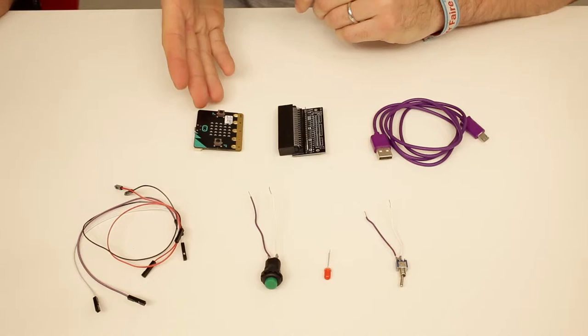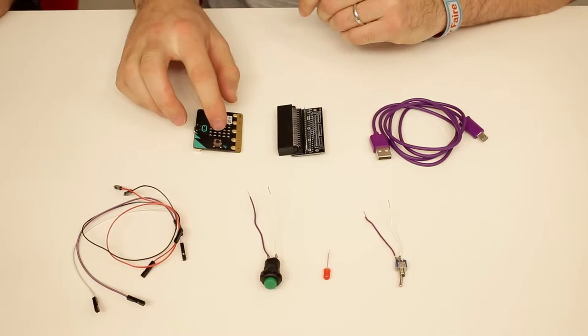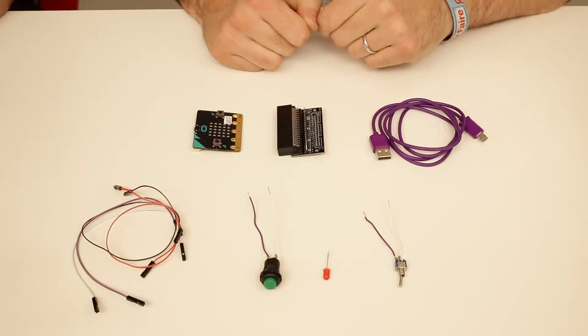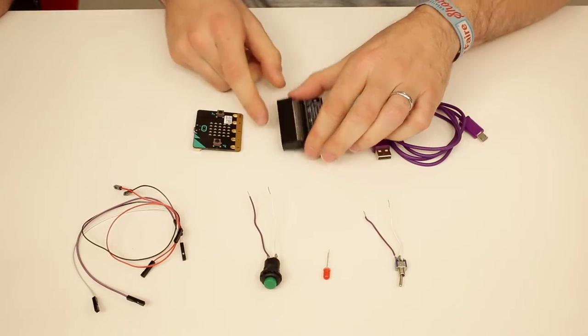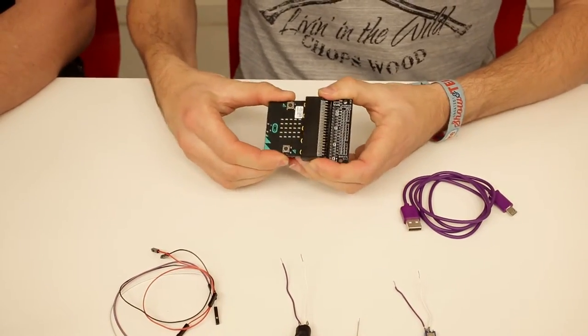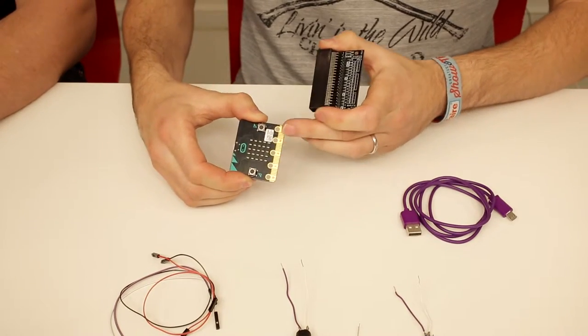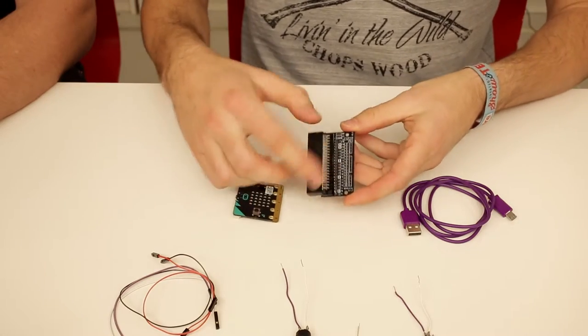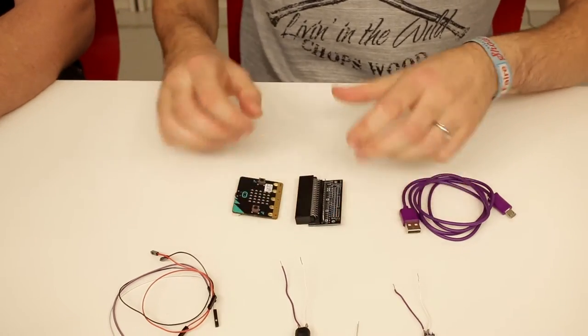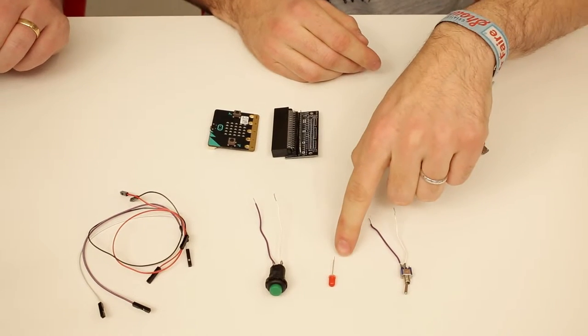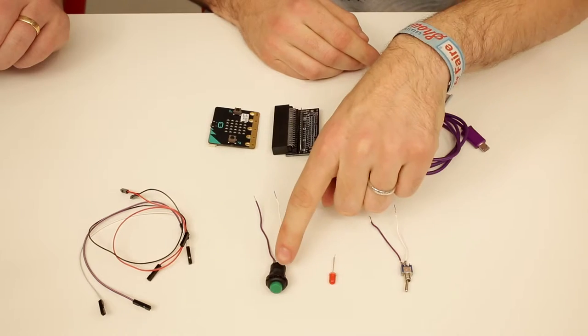Well, of course we need a micro:bit, and we're also going to use this accessory called the edge connector breakout board. We can plug in the micro:bit there to get access to all the pins on the edge. Then we have a USB cable, a little switch, an LED, a push button, and some prototyping cables to connect the electronics.